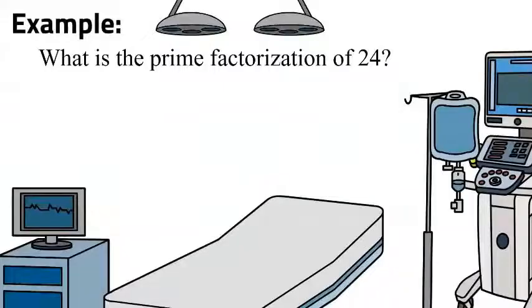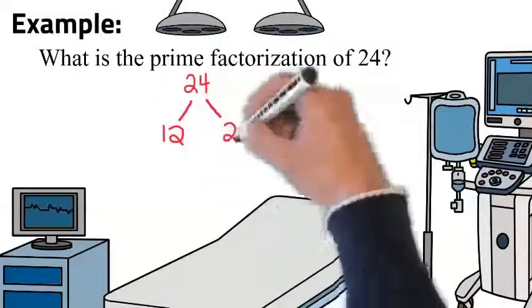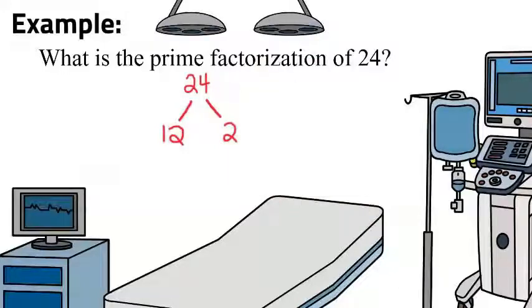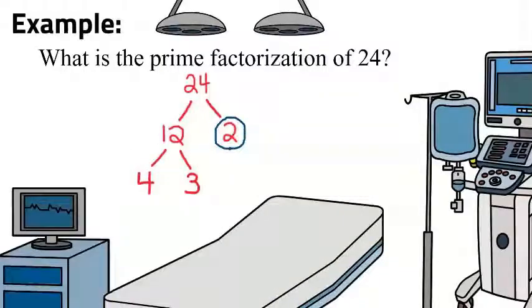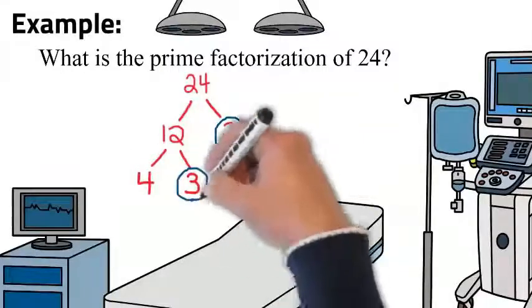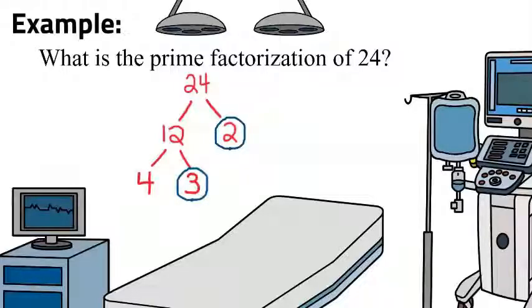24 can be broken up into its factors 12 times 2. 2 is prime, so let's circle it. 12 can be further broken down into factors of 4 and 3. 3 is prime, so let's stop there and circle it. But 4 can be broken down into 2 times 2. And since 2 is prime, we can circle those and stop there.